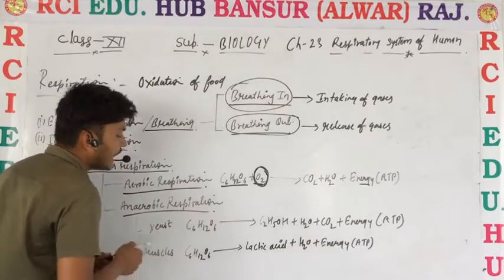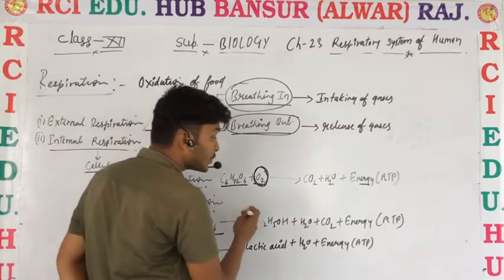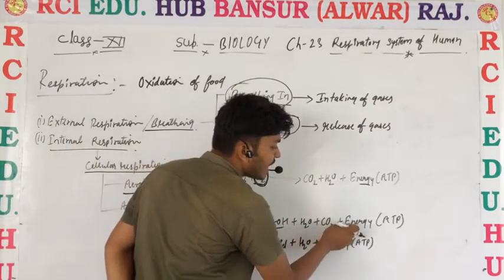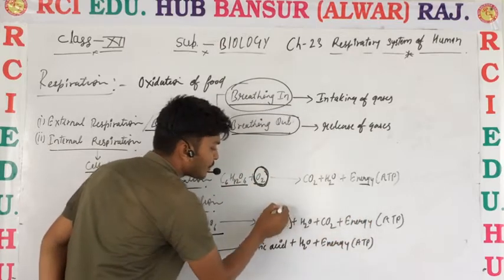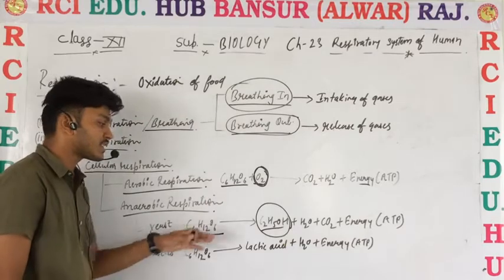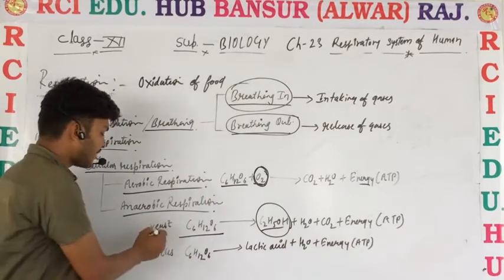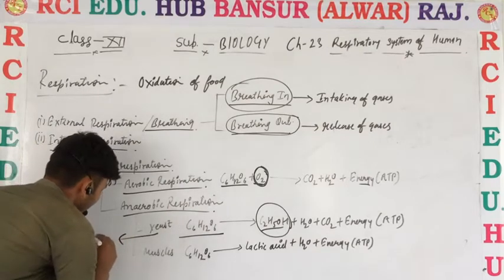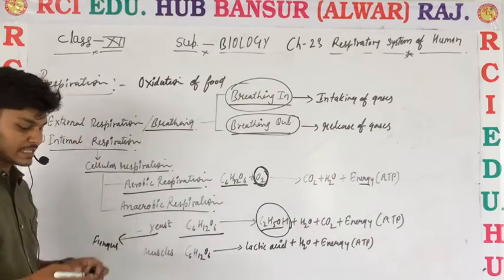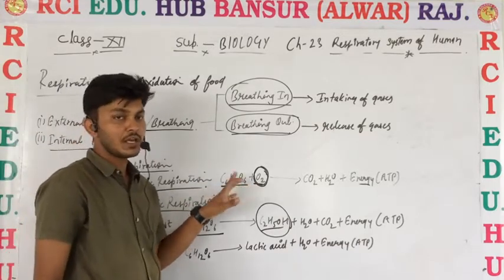In yeast, whatever food (glucose) is present, the glucose is converted into ethanol, water, CO2, and energy. A byproduct is formed in this process, and that byproduct is ethanol. This process is not found in humans — it is found only in yeast, which is a kind of fungus. In fungus, there is no utilization of oxygen in this process.